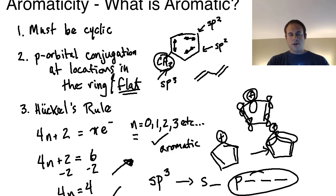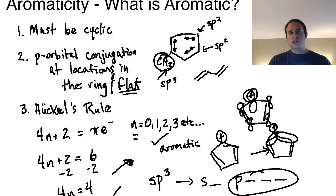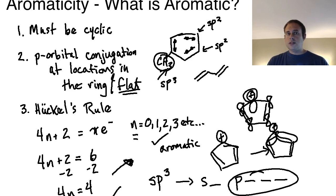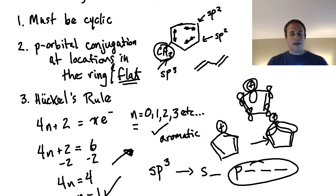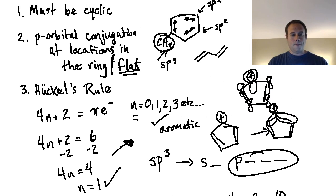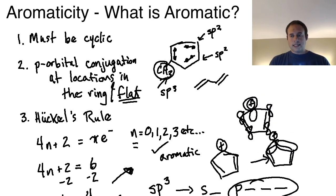There will be a follow-up lecture on when lone pairs contribute to aromaticity or not, which confuses many students. Sometimes lone pairs are found in a p orbital and sometimes they are not, and whether they're in a p orbital determines whether they can contribute as pi electrons toward Hückel's rule.